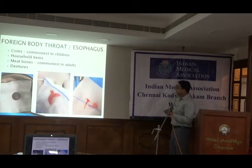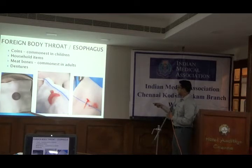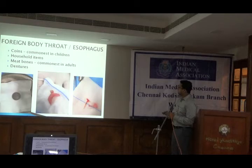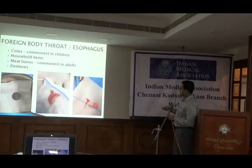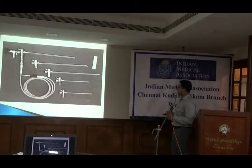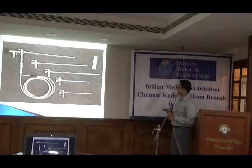Coming to foreign body throat or esophagus — this is also fairly common. Some of the foreign bodies we have removed in the past one to two months: commonly in children it is the coin, which is the most common foreign body. Among others it is meat bones. This picture shows a fish bone which was removed from the esophagus. Among the older population, dentures are also very common. We use a rigid esophagoscope with a light source for removing the foreign body in the theater.